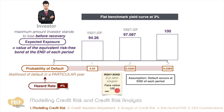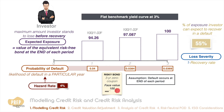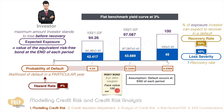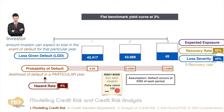Another important factor in credit analysis is the recovery rate — the percentage of the exposure the investor can expect to recover in the event of default. Loss severity is the opposite of the recovery rate. If the recovery rate is 55 percent, the loss severity is 45 percent. Multiplying loss severity by the expected exposure for each period gives us the loss given default — the amount the investor can expect to lose in the event of default for that particular year.